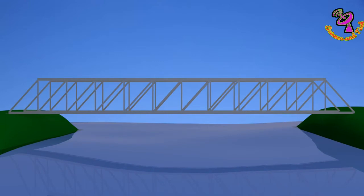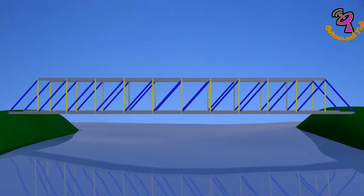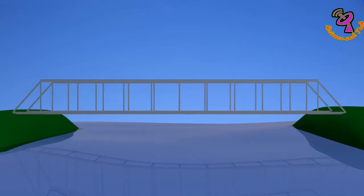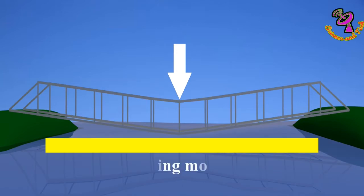When any force acts on truss construction, that force will distribute in all elements equally. Generally, if an element span is too much, it will bend while force acts on it. This is called a bending moment.